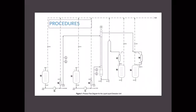Now let's follow the procedures for this experiment. First, perform the general start-up procedures. Switch on both pump 1 and pump 2, and allow both liquids to flow into collection vessels B3, which is the raffinate, and B4, which is the extract, respectively. The bottom product contains the water-rich phase, which is the raffinate, while the top product consists of the toluene-rich phase, which is the extract.